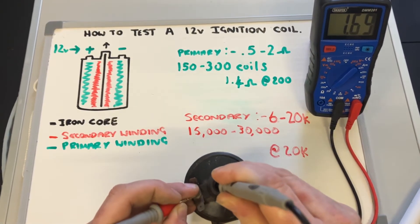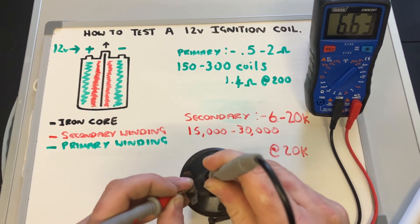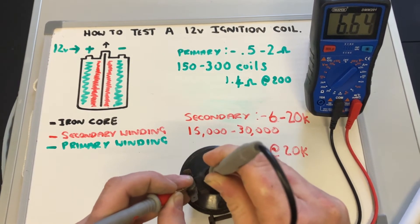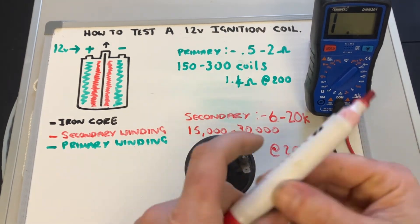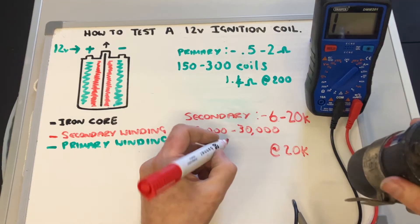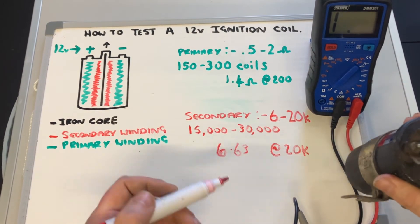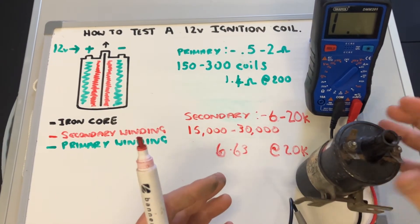As you can see from the whiteboard, again looking between 6 and 20,000 ohms resistance. So in this case, 6.63 thousand, so 6,630 ohms resistance, which is right at the bottom end of the expected on it, so quite a good condition coil. So we've got 6.63 ohms at the 20,000 setting. Both those within specs—this ignition coil is fine.